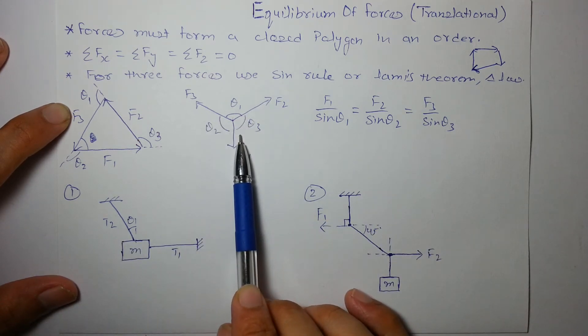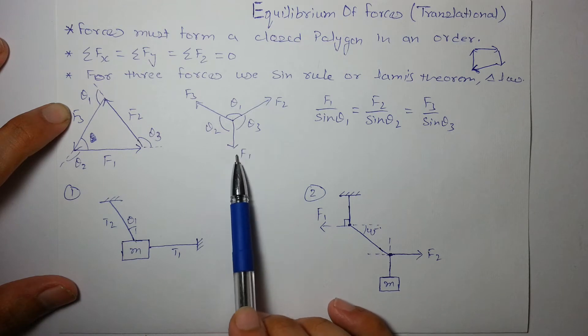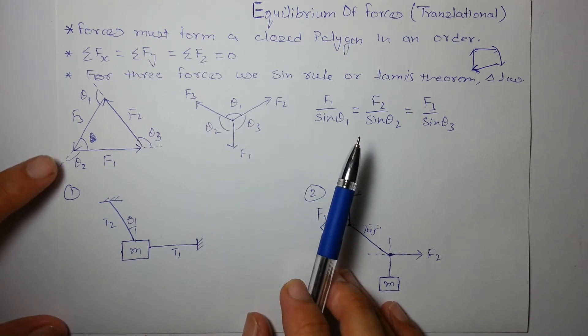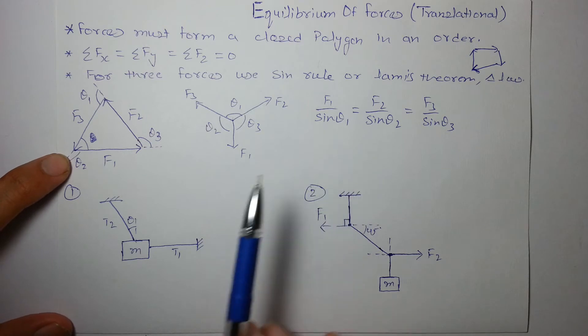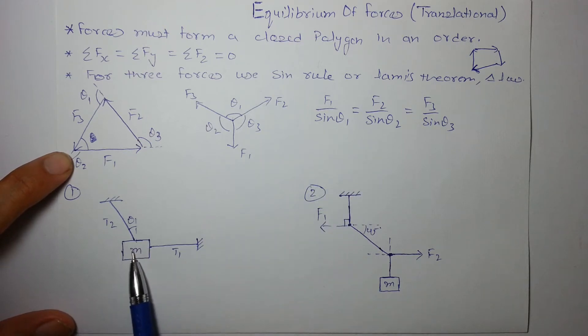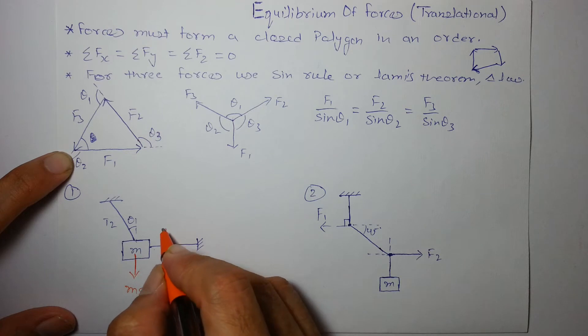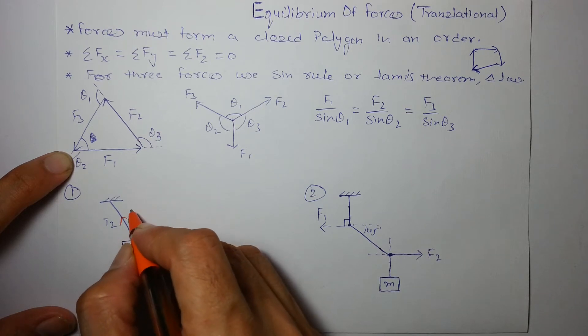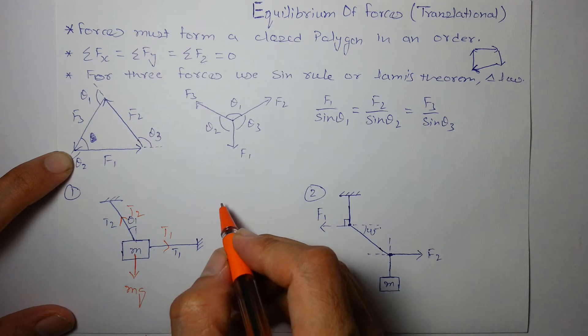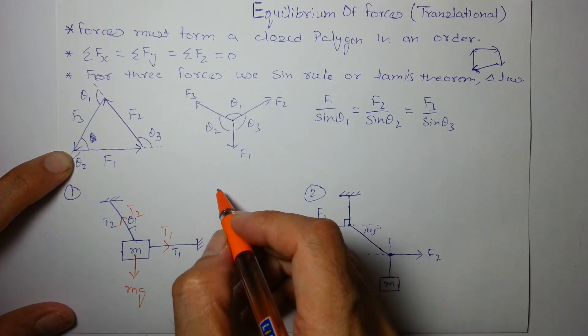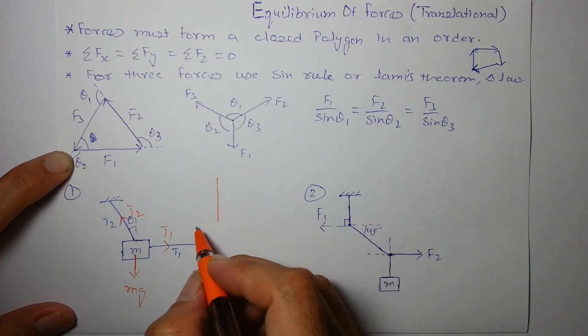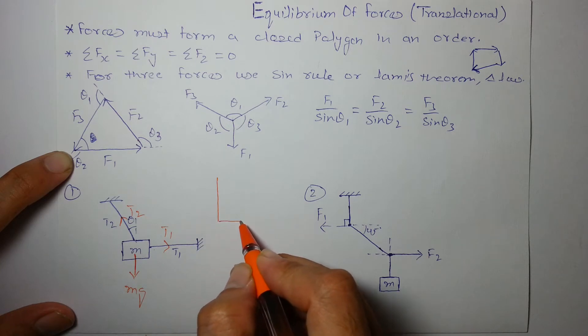So these forces can act like this also. Again f1 opposite angle is theta 1 and so on. So, let's start with the first example. Let's say this is a block at equilibrium under the action of three forces. I should apply these three forces. This is mg, this is t1 and this is t2. So, on solving this or we can form a triangle in an order. We can always form a triangle in an order.